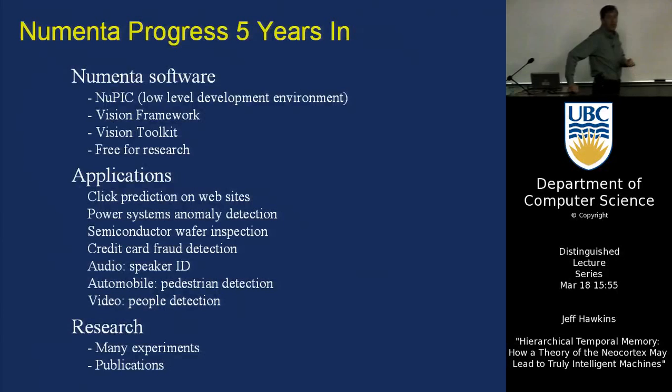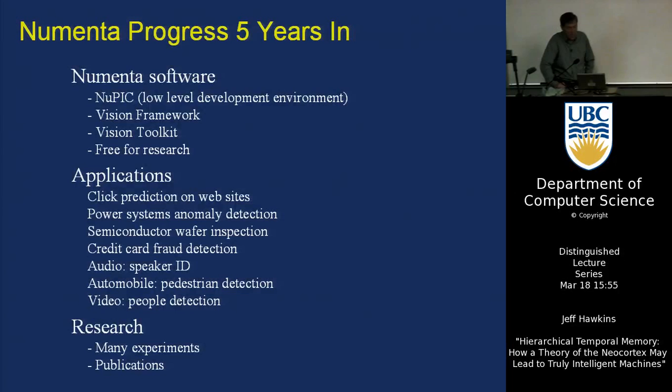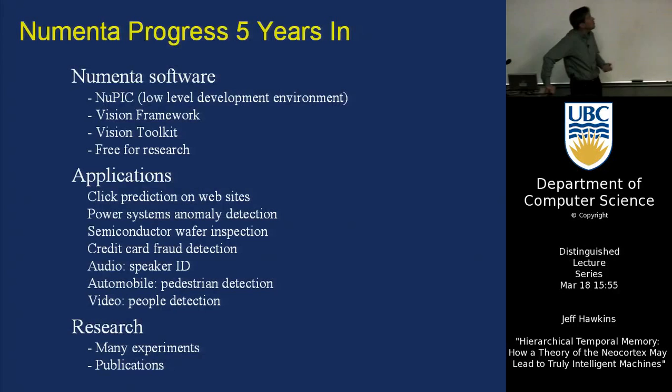I want to jump to the conclusion — we've been at this for five years at Numenta and what have we done? We've produced a lot of software, almost all of which people can download for free. We have a low-level development environment called NuPIC which allows you to build and test these models. We have several things related to vision: a vision framework and a vision toolkit. These are specifically designed for spatial vision problems, and we have a number of companies we've been working with applying this to different problems.